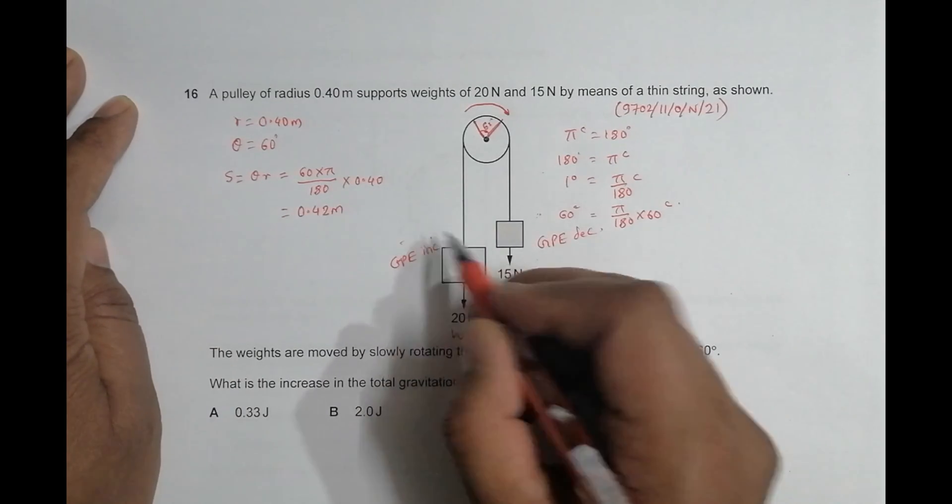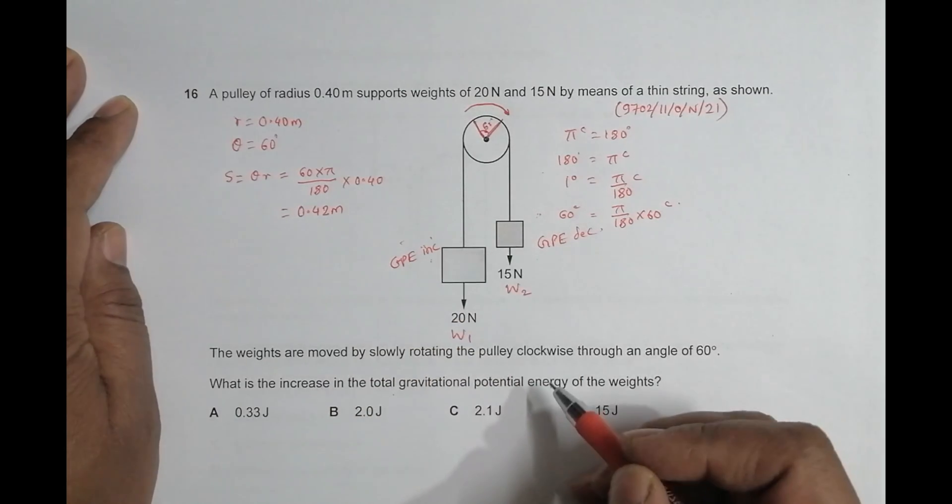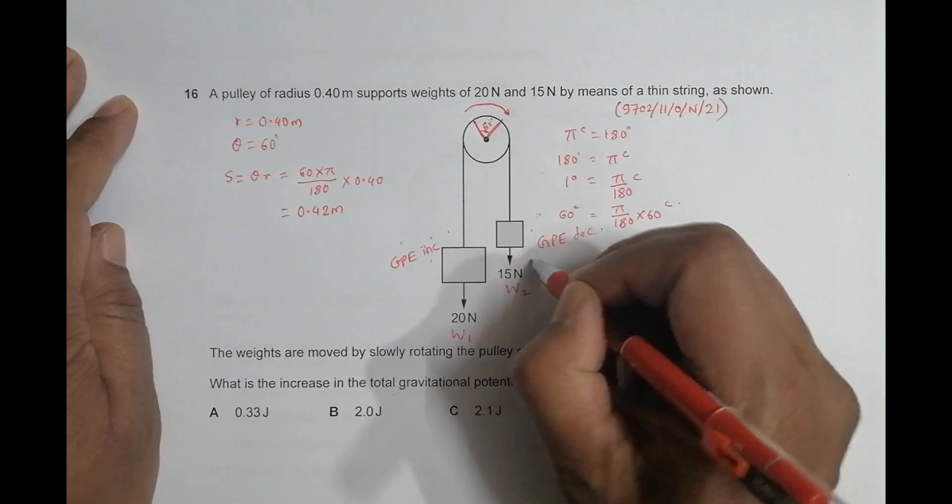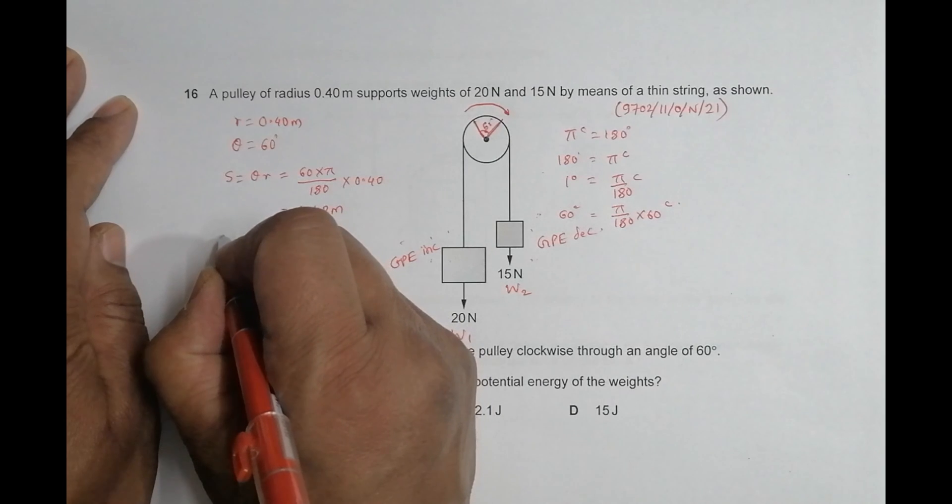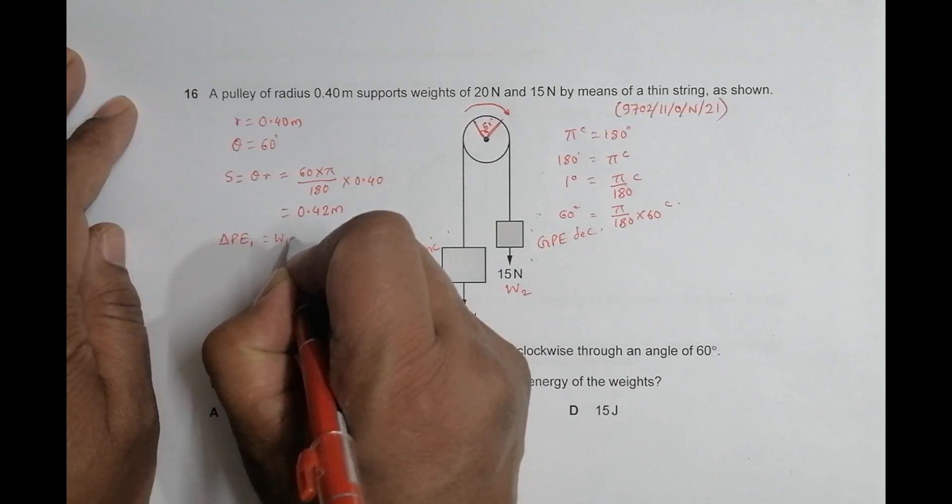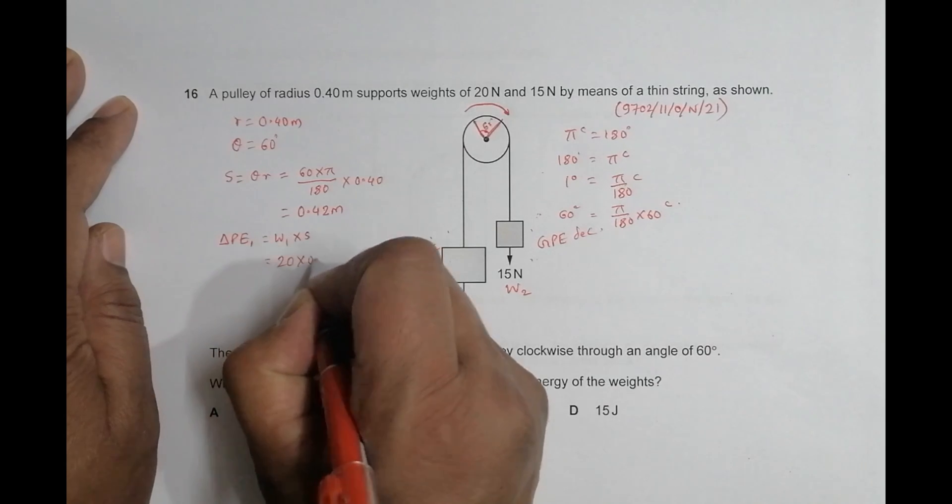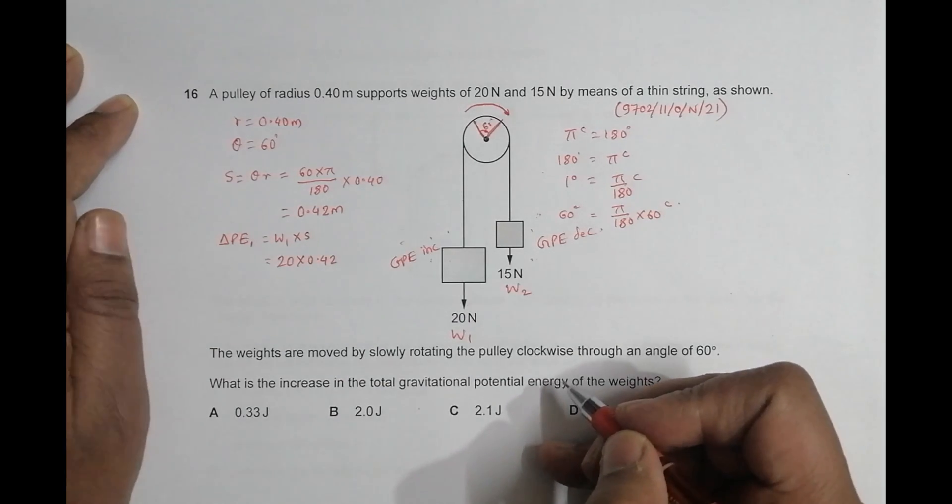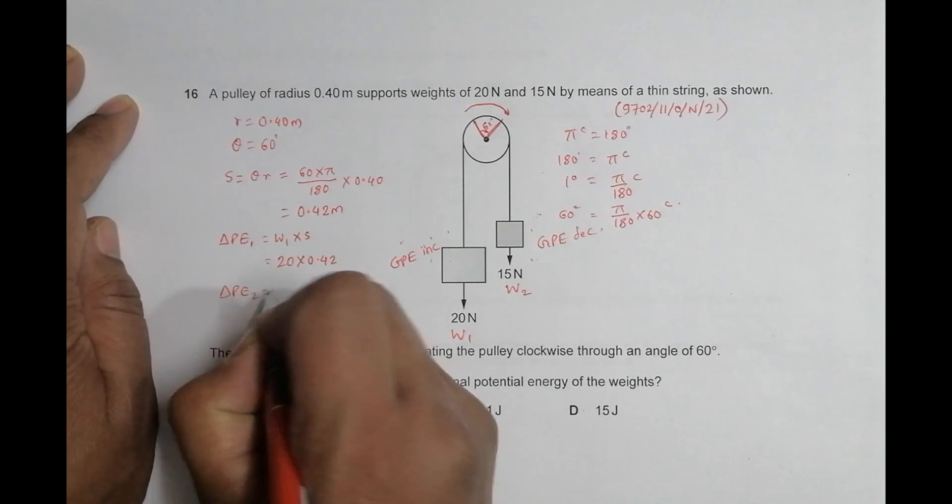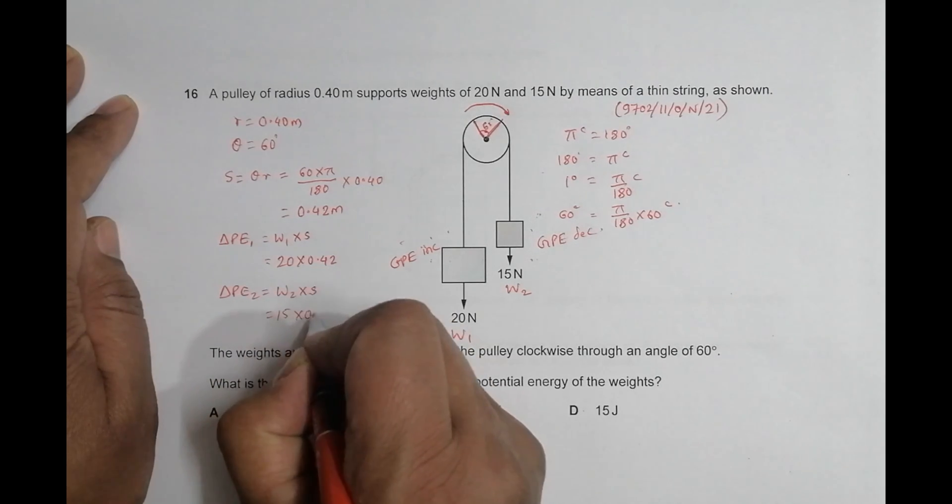So it moves up by 0.42 meters and it goes down by 0.42 meters. So now, its PE will increase, its PE will decrease. So what we have is, delta PE of this left one is equal to W1 into this S equal to 20 into 0.42. Similarly, delta PE of the right one is equal to W2 into that, equal to 15 into 0.42.